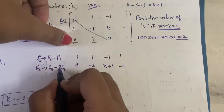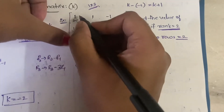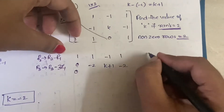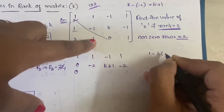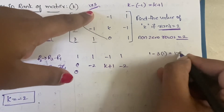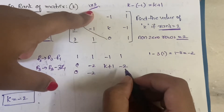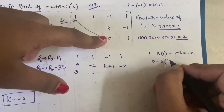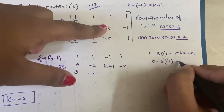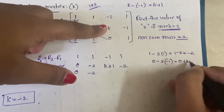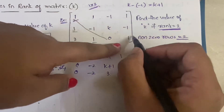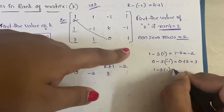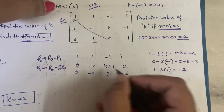For R3 minus 3R1: 3 minus 3 times 1 is 3 minus 3, which is 0. Next, 1 minus 3 times 1 is 1 minus 3, which is minus 2. Then 0 minus 3 times minus 1 is 0 plus 3, giving 3. Finally, 1 minus 3 times 1 gives minus 2.